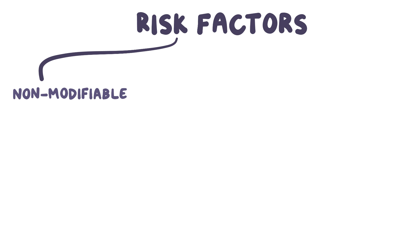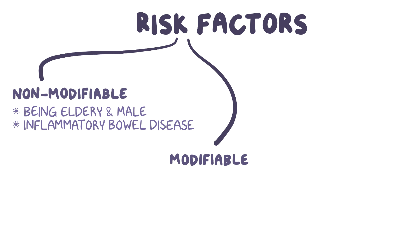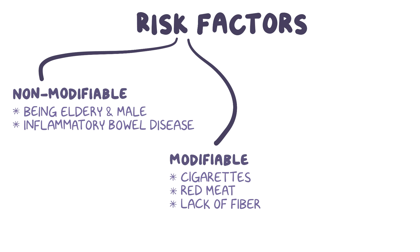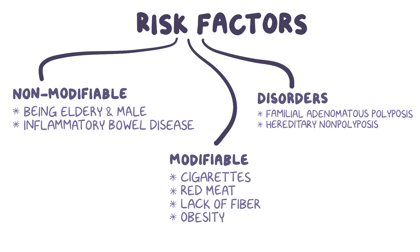There are some non-modifiable risk factors for colorectal cancer, like being an elderly male and having inflammatory bowel disease, but there are also some modifiable risk factors as well, like smoking cigarettes, eating a lot of red meat, not eating a lot of fiber, and being obese. Colorectal cancers are also associated with specific disorders like familial adenomatous polyposis, as well as hereditary non-polyposis colorectal cancer.